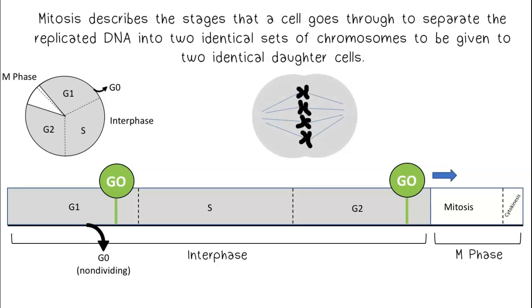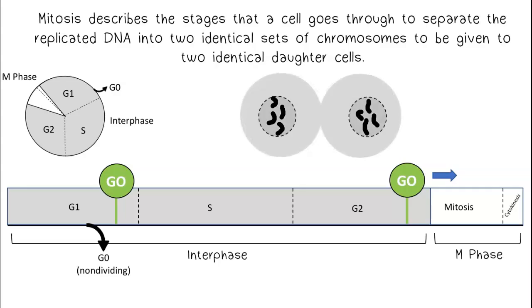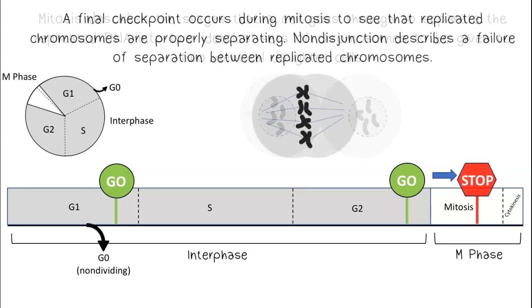Mitosis describes the stages that a cell goes through to separate the replicated DNA into two identical sets of chromosomes to be given to two identical daughter cells. A final checkpoint occurs during mitosis to see that replicated chromosomes are properly separating.